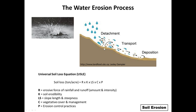You may have heard of the USLE, or the Universal Soil Loss Equation. It's a great way to look at what we can do to manage erosion by water. The formula calculates soil loss in tons per acre, equal to factors R, K, L, S, C, and P. R is the erosive force of rainfall and runoff — the amount and intensity.